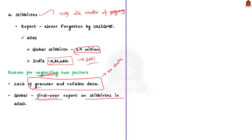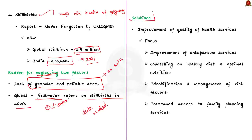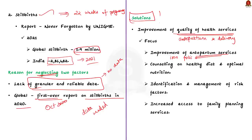Experts say there should be timely and reliable data on stillbirths and preterm births from the block, district and state levels. What can be done? Stillbirths and preterm births can be prevented by improving the quality of health services. Note that half the stillbirths happen during antepartum and the remaining during delivery. So the focus should be on improving antenatal services, including the intake of iron folic acid by pregnant mothers. We should also provide counselling on the importance of healthy diet and optimal nutrition, identify and manage other risk factors, and increase access to family planning services.